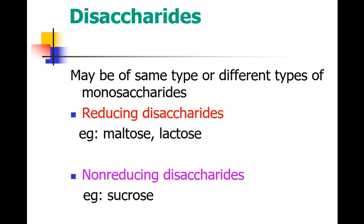Disaccharides have two monosaccharide units in their structure. These two saccharides may be of the same type or of different types — same monosaccharide or different monosaccharides. Two types of disaccharides can be seen: reducing disaccharide and non-reducing disaccharide.